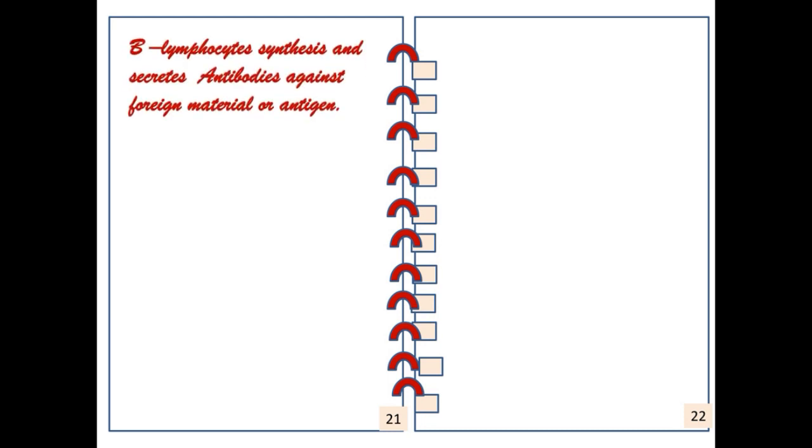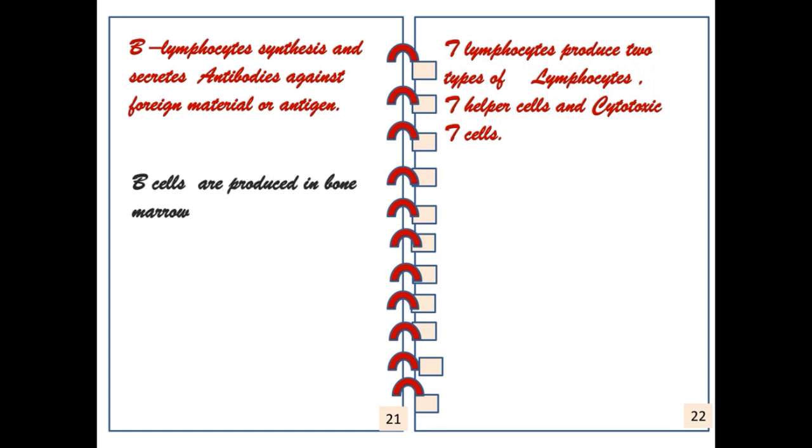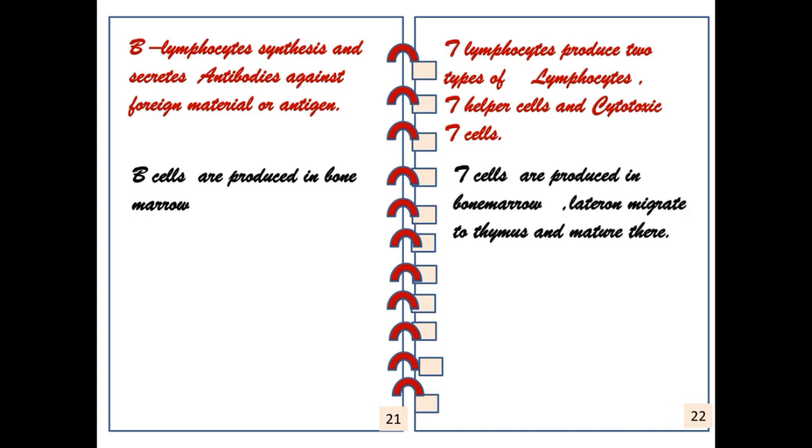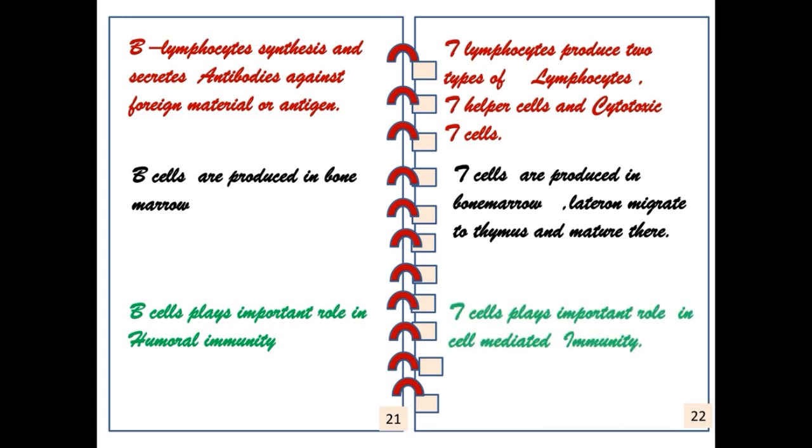B lymphocytes synthesize and secrete antibodies against foreign material or antigens. T lymphocytes produce two types: T helper cells and cytotoxic T cells. B cells are produced in the bone marrow. T cells are produced in the bone marrow, later migrate to the thymus and mature there. B cells play an important role in humoral immunity. T cells play an important role in cell-mediated immunity. These are the differences between B lymphocytes and T lymphocytes.